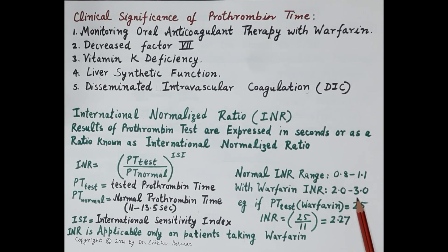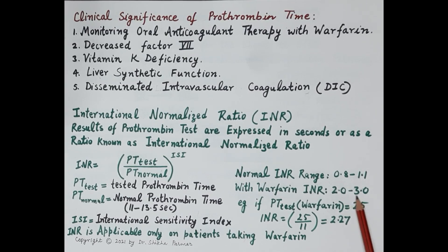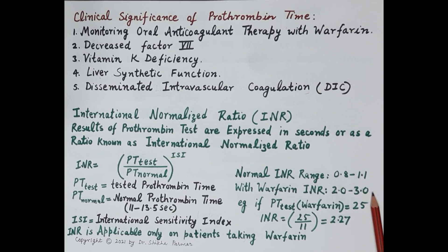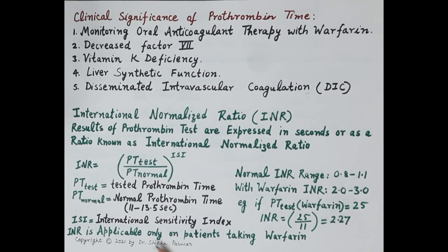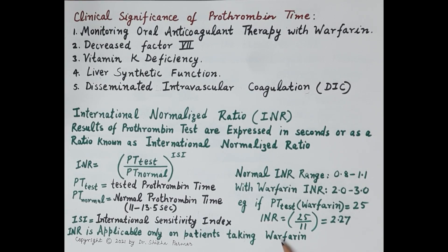If the INR for a patient on warfarin is more than 3, that indicates a high risk of bleeding and the dose of warfarin should be reduced. On the other hand, if the INR is less than 2, effective anticoagulant effect is not obtained and the dose of warfarin should be increased. Importantly, INR is a concept applicable only to patients taking warfarin.